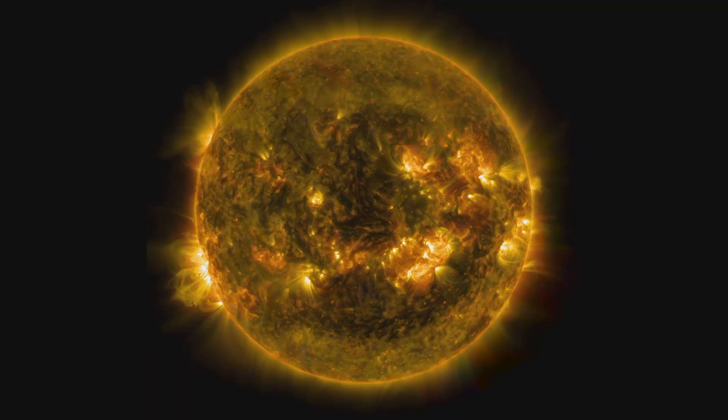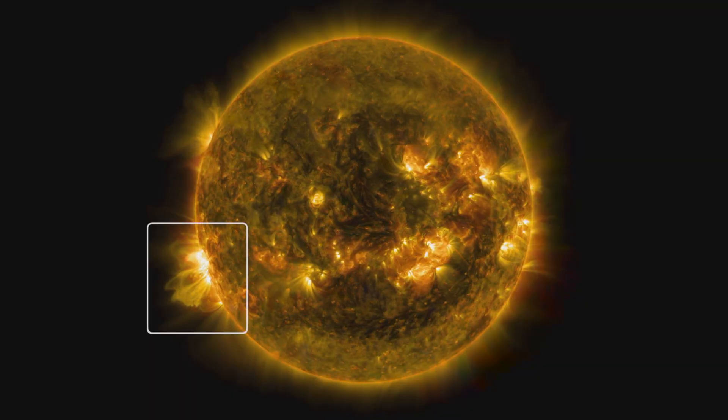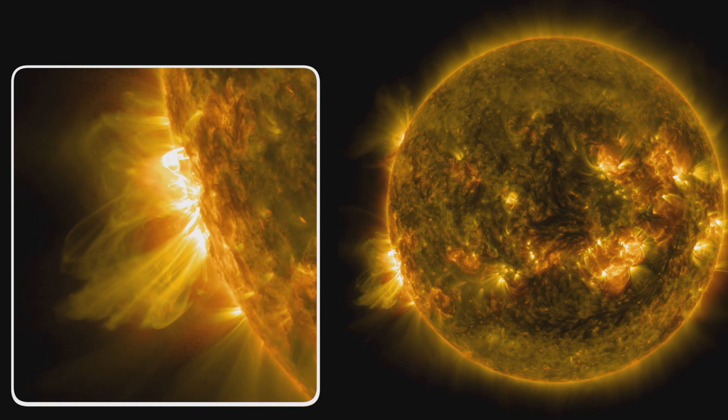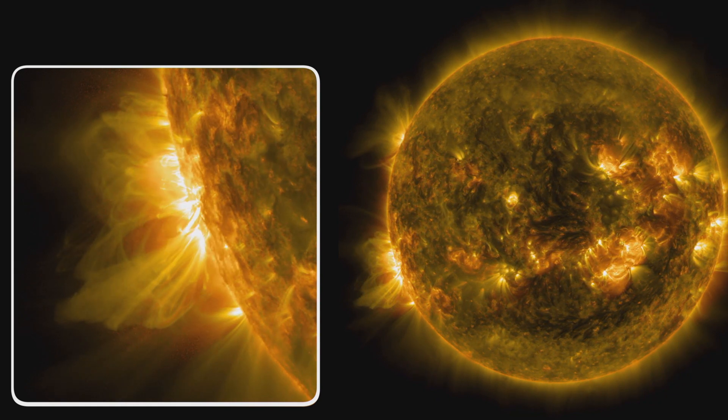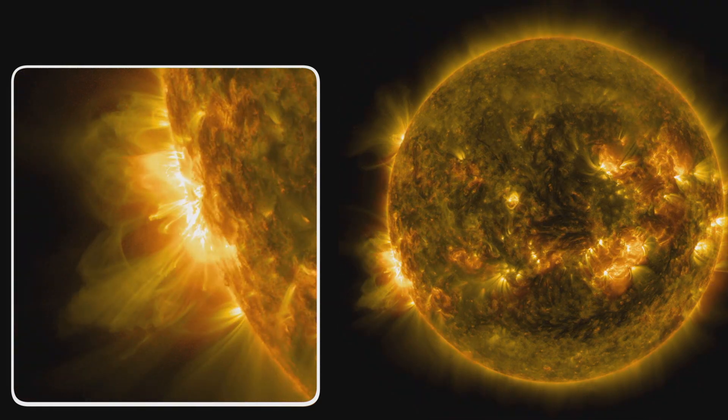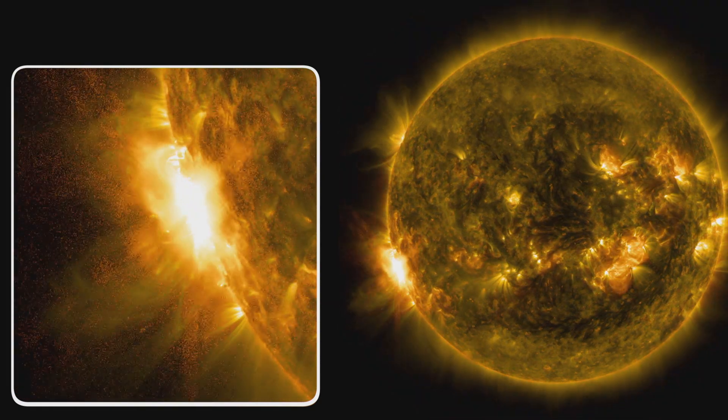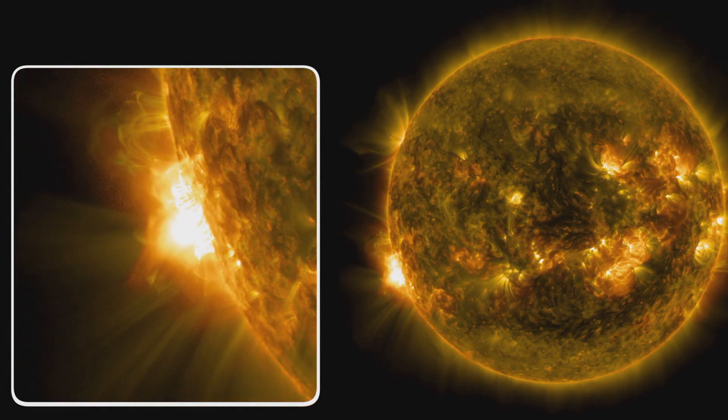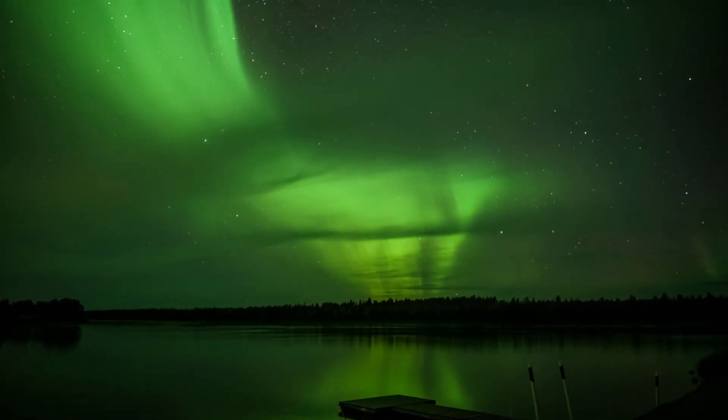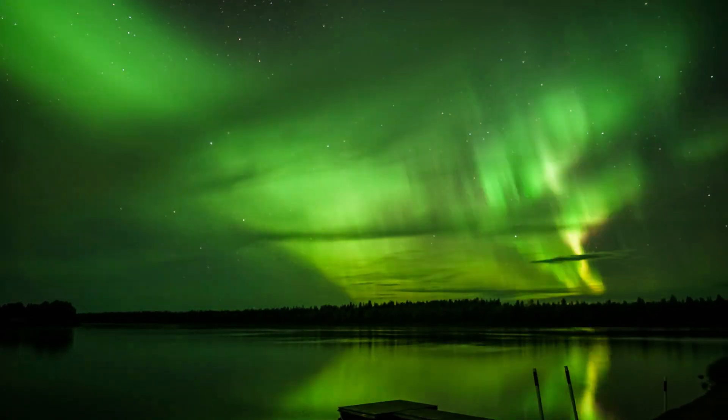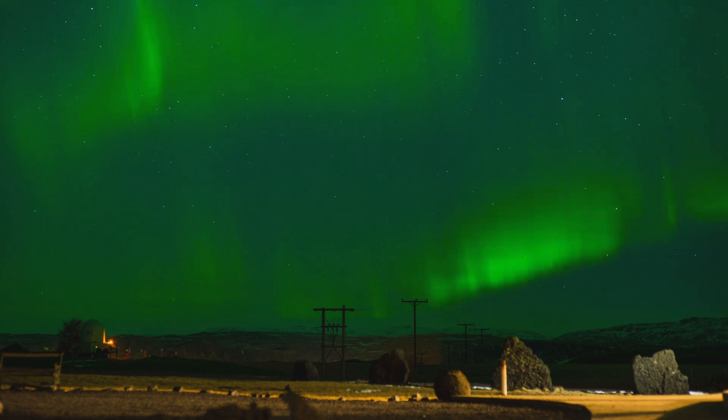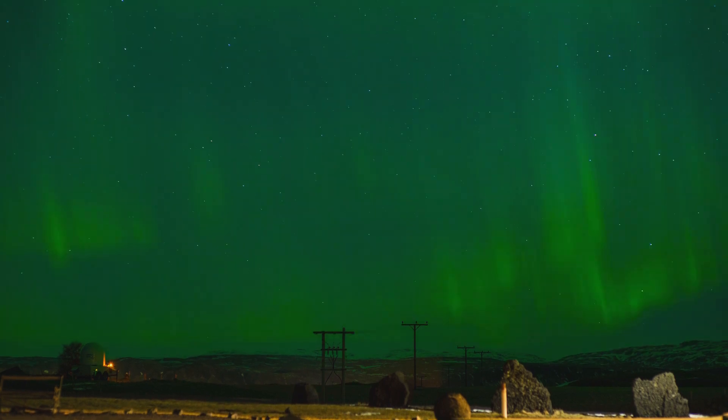Giant eruptions on the sun, such as solar flares and coronal mass ejections, also increase during the solar cycle. These eruptions send powerful bursts of energy and material into space. This activity can have effects on Earth. For example, eruptions can cause lights in the sky called aurora or impact radio communications. Extreme eruptions can even affect electricity grids.